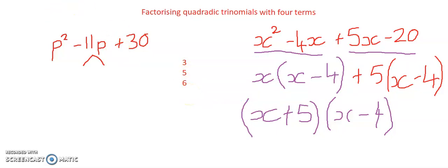I'm going to rewrite it as p squared minus 5p minus 6p plus 30.